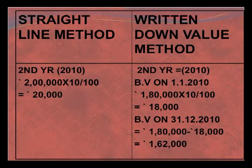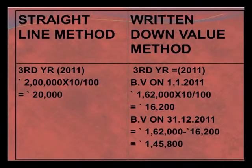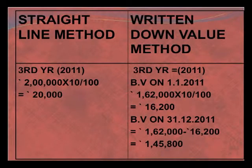In the third year, under the straight line method we again charge a constant depreciation of rupees 20,000. Under the written down value method, depreciation is calculated on the book value of 1 lakh 62,000 at 10%, which comes to rupees 16,200. So at 31st December 2011, the remaining book value is 1 lakh 62,000 minus 16,200, which equals 1 lakh 45,800. Thus, the depreciation under the straight line method is constant, while under the written down value method it declines each year.